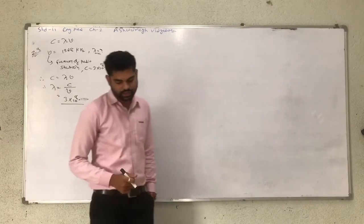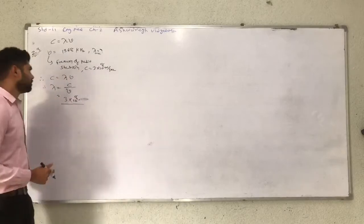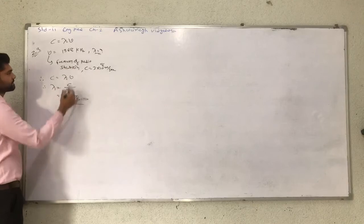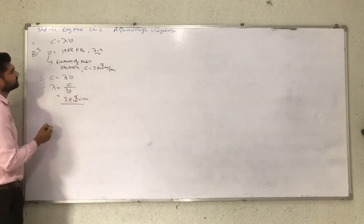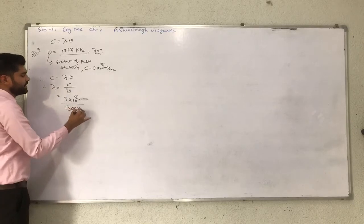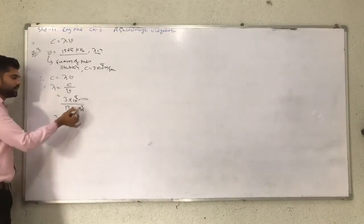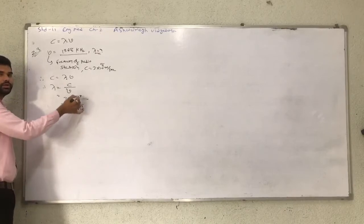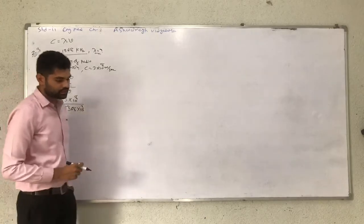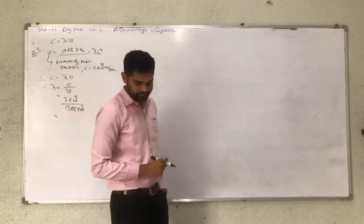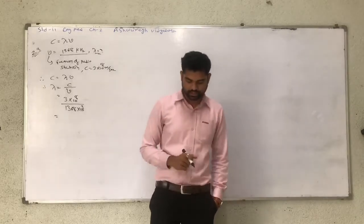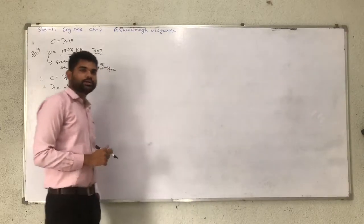To remove kilo, we put 10 raise to 3. Therefore, the value of frequency becomes 1368 into 10 raise to 3. The 10 raise to 3 in the denominator goes to the numerator, giving 10 raise to 5. After calculation, the final answer in meters is 219.3 meters.